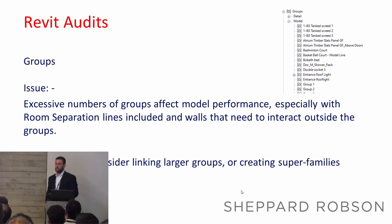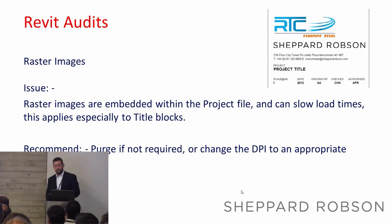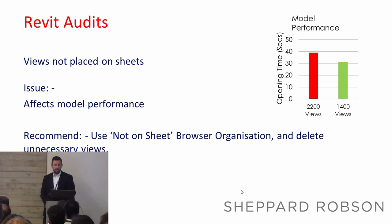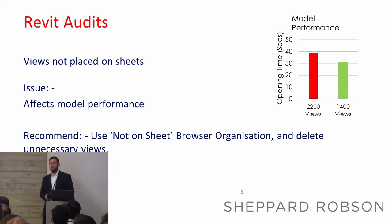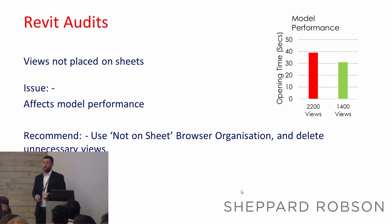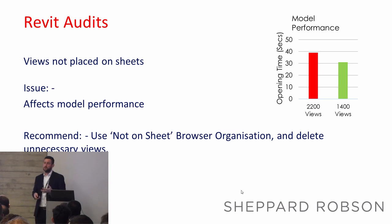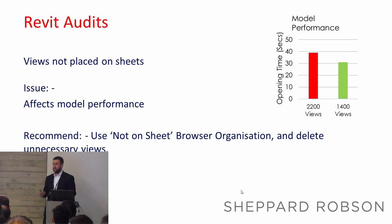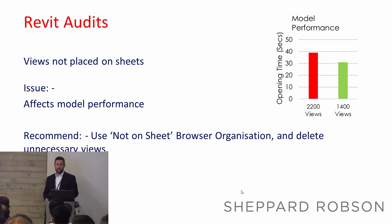Excessive numbers of groups are a no-no, so keep them out as much as possible. Raster images like renders increase file size — if you don't need them, clear them out. Views not placed on sheets are another common problem: people create work-in-progress sections just to interrogate parts of the model but don't delete them. We've modified the browser settings so it only shows views not placed on sheets, making it easy to see and clean them up. It's about prevention rather than sorting things out afterwards.